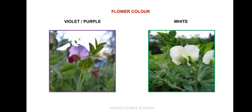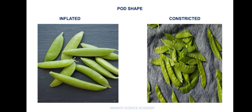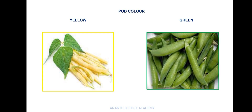The next character is flower color, with two contrasting traits: violet and white. Next is flower position, with two contrasting traits: axial position and terminal position. The next character is pod shape — a pod is the fruit of the pea plant — with two contrasting traits: inflated pod and constricted pod. You can see the difference in the shape. Next is pod color, with two contrasting traits: yellow color pod and green color pod.